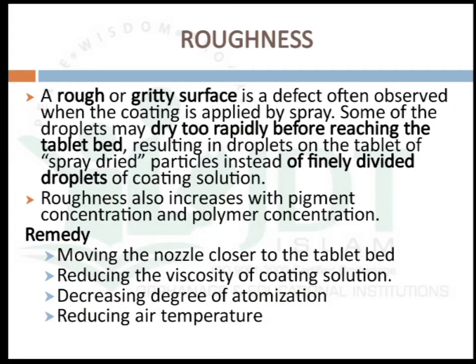The next defect is roughness. A rough or gritty surface is a defect often observed when coating is applied by spray coating method. Some droplets may dry too rapidly before reaching the tablet bed, resulting in spray-dried particles on the tablet instead of finely divided droplets of coating solution. Roughness also increases with pigment concentration and polymer concentration. This can be rectified by moving the nozzle closer to the tablet bed, by reducing the viscosity of the coating solution, by decreasing the degree of atomization, or by reducing the drying air temperature.